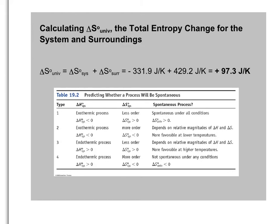Now let's put it all together. ΔS_system = −331.9 J/K and ΔS_surroundings = +429.2 J/K. Adding those together gives a positive 97.3 joules per kelvin for the change in entropy of the universe. Indeed, the synthesis of methanol is a spontaneous process because we get a positive change in entropy of the universe.